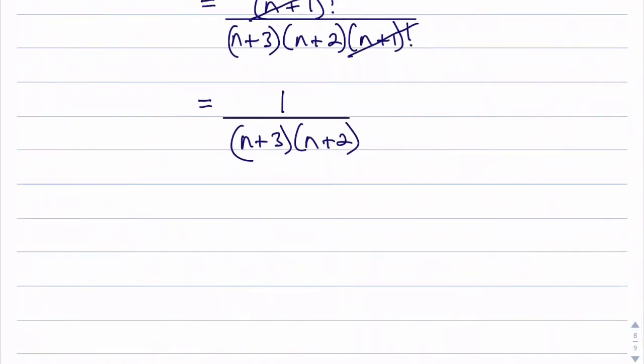Let's go ahead and expand that denominator. So I'll get 1 over, I'm going to get an n squared, I'm going to get a 3n and a 2n so that's going to be plus 5n, and then the 3 multiplied by the 2 will be plus 6.